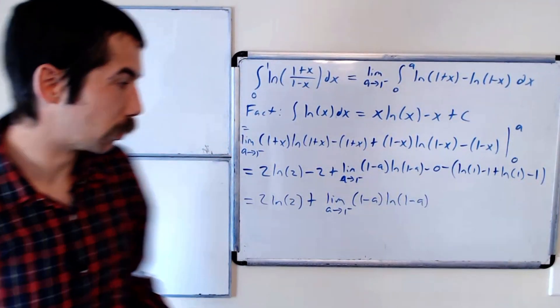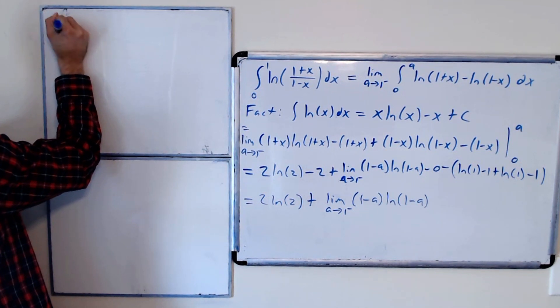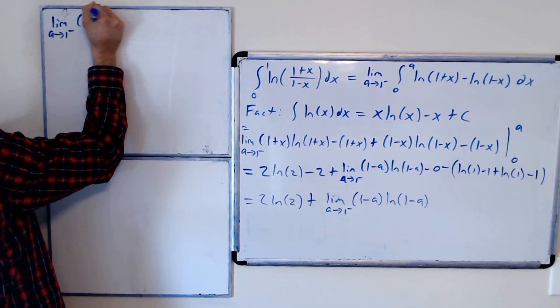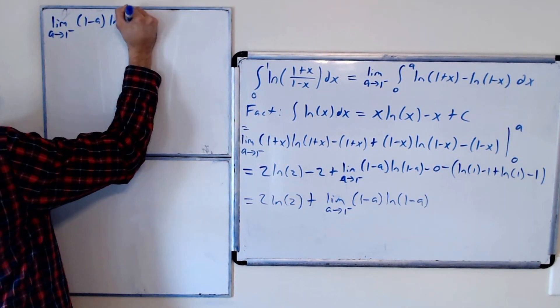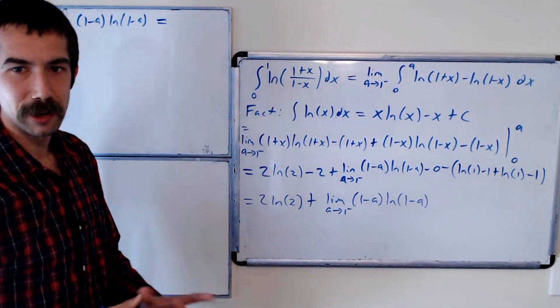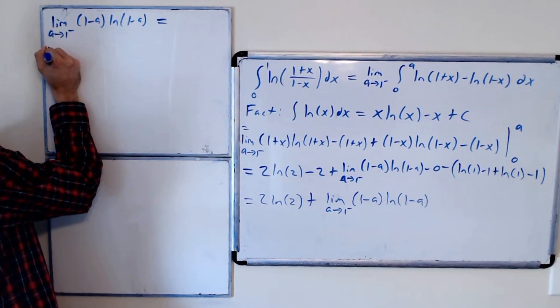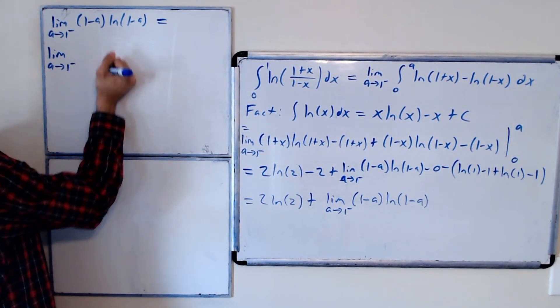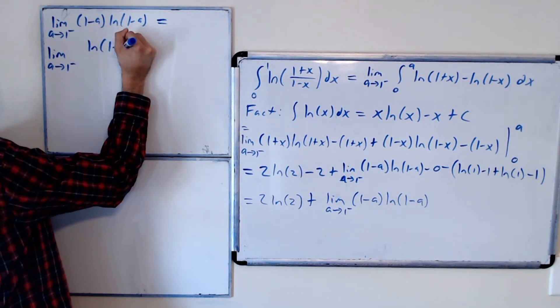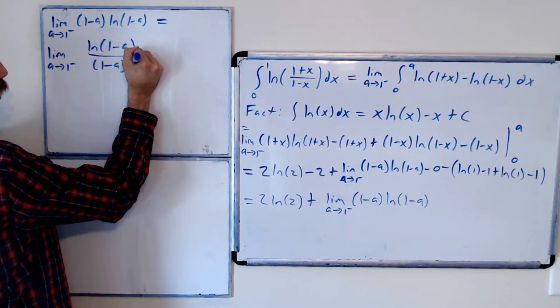We're going to use L'Hopital's rule. So the limit, as a goes to 1 from the left, of 1 minus a ln of 1 minus a is equal to, well, to use L'Hopital's rule, we have to have a fraction. So let's bring this to the denominator. This is equal to the limit, as a goes to 1 from the left, of ln of 1 minus a over 1 minus a to the negative 1.